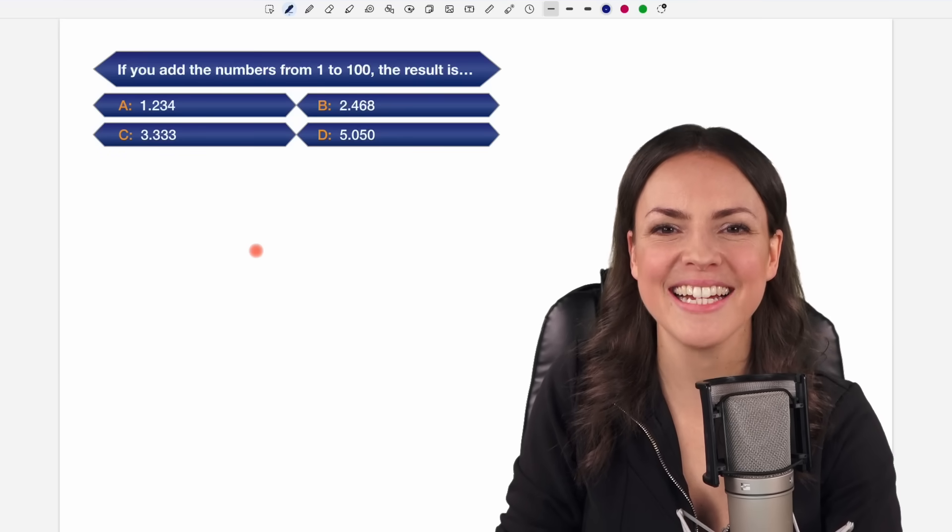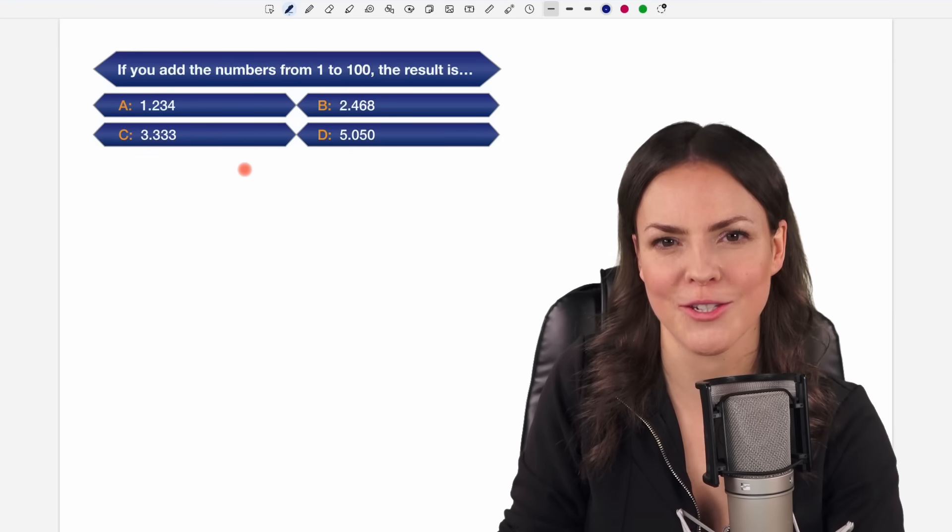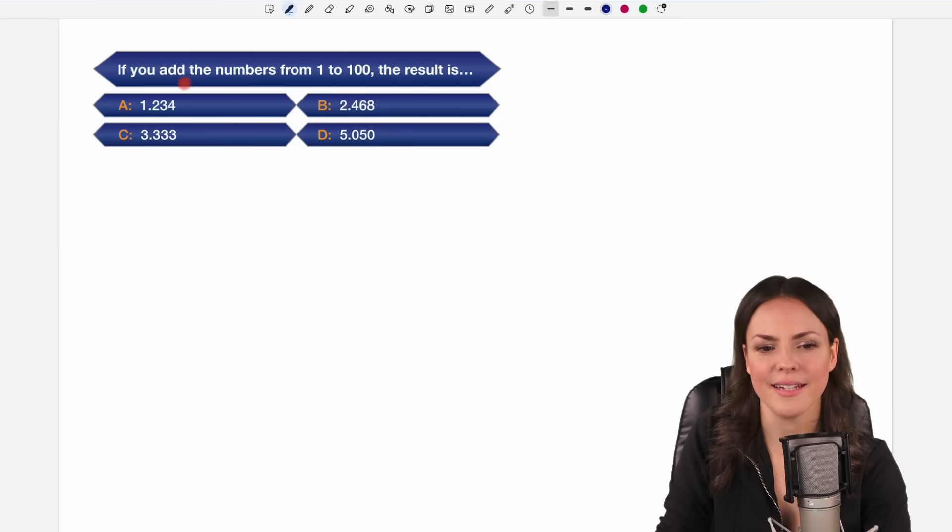Hello my lovelies, it's Susanna and today I want to show you how to solve this $32,000 question from Who Wants to Be a Millionaire. If you add the numbers from 1 to 100, the result is A, B, C or D. What would be your first guess?